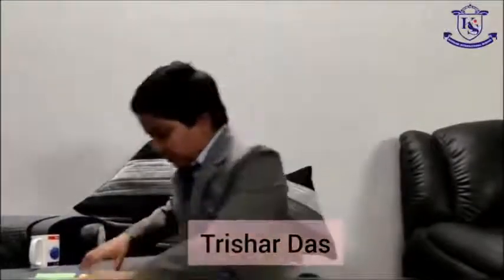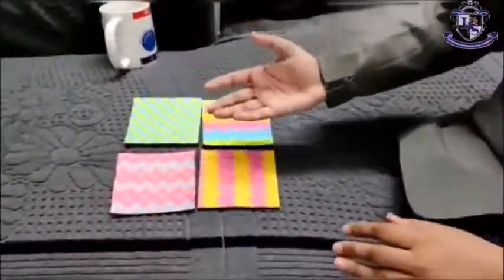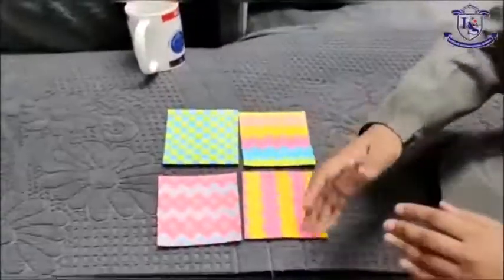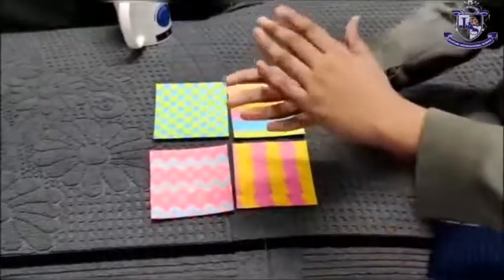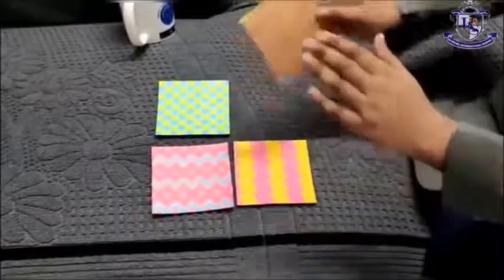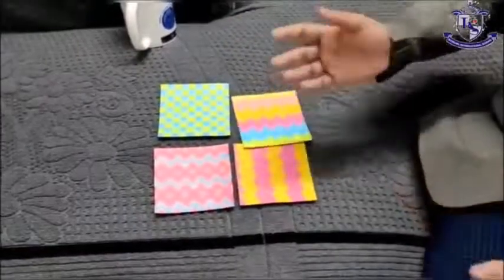Namaskar everyone. I am Trisha Daft from class 5B. Do you know what I am holding in my hands? Coasters — you got that right. But these are not ordinary coasters. These are coasters made by me using maths and art. It's a style called tessellation. Tessellation is the arrangement of similar shapes to make endless patterns without gaps. I have made these coasters by pasting multi-coloured pastel sheets on hard boards using the tessellation method.